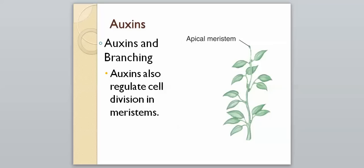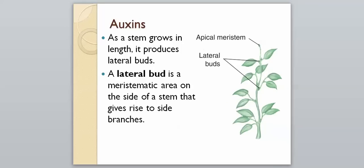Auxins also play a role in the way that plants will branch. They regulate cell division in our meristems — the tip is where new cells are produced. As a stem grows in length, it produces lateral buds. A lateral bud is a meristematic area on the side of the stem that can give rise to side branches. You can see it does have new meristematic tissue, but it will almost always grow into branches.